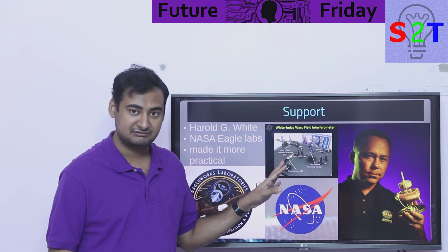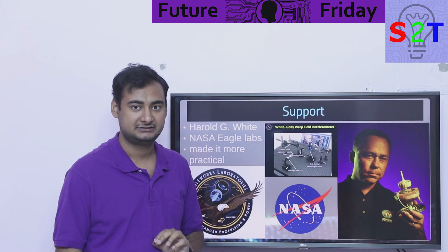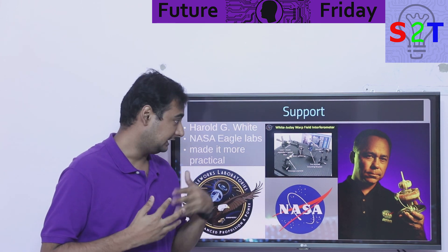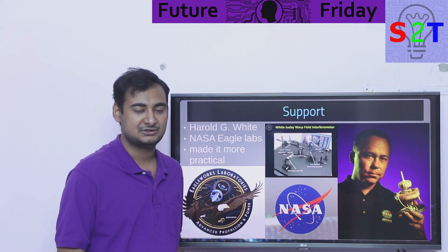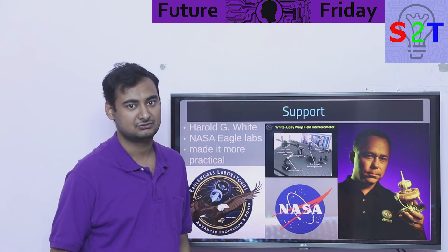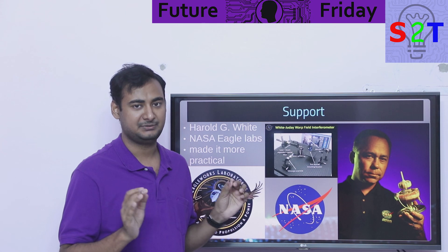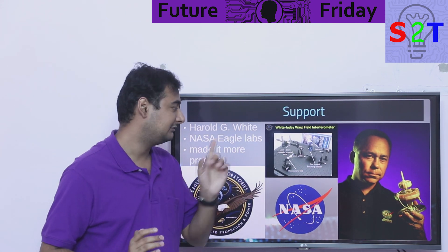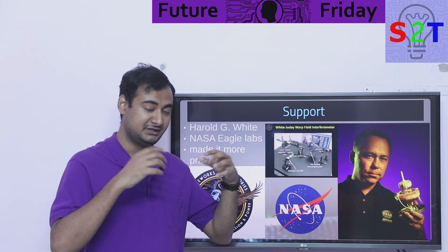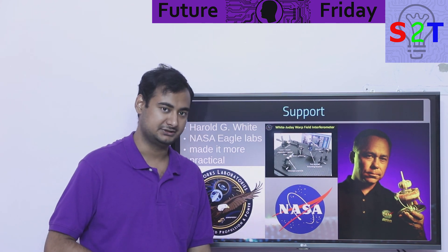Not only that, he created what's called a White-Juday warp field interferometer — the idea being to actually test whether warping is happening or not. The instrument is so sensitive they're dealing with too many false positives, so they're still testing it. They plan to move into vacuum chamber testing and high vacuum chamber testing. If even a remote warping of space can happen — not faster than light travel, just warping itself — they should be able to detect it using this instrument.